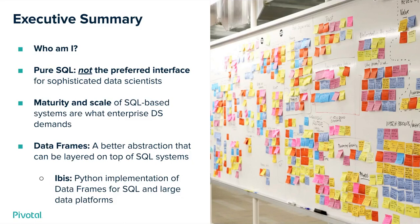SQL-based systems have a level of maturity and scale that are necessary for enterprise data science demands. Instead, what is popular is an abstraction called data frames that can be layered on top of SQL-based systems. In particular, I'll share about a package in Python that is an implementation of this abstraction for large data platforms, and it's called IBIS.